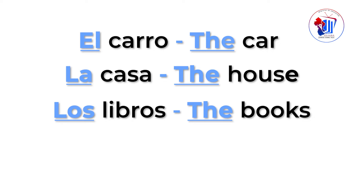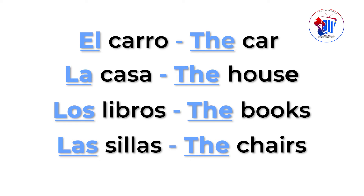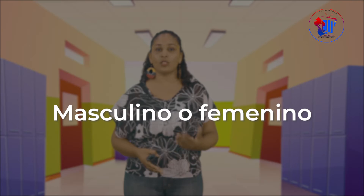Número tres: los libros. Libros en inglés significa books. Si queremos decir los libros, decimos "the books". Número cuatro: sillas. En inglés, la palabra sillas significa chairs. Si queremos decir las sillas, decimos "the chairs". Como pueden observar, los artículos definidos en inglés son bastante sencillos, ya que estos no distinguen en género — si es masculino o femenino — ni tampoco en número, si es singular o plural.